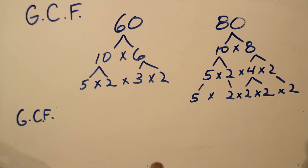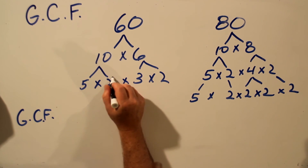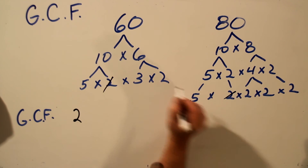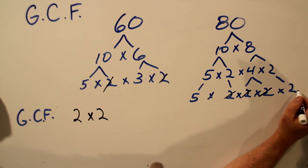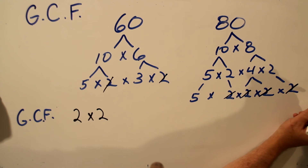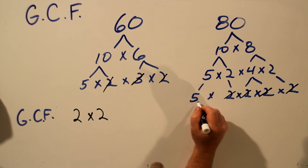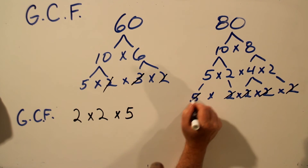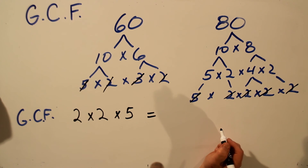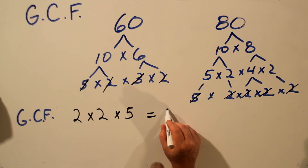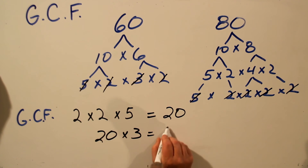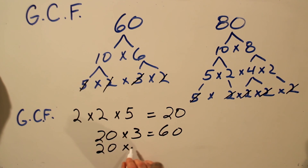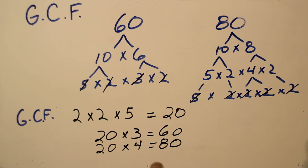So we'll find the greatest common factor. There's a 2 in this list and a 2 in this list, so we'll use 2. And there's another 2 in this list and another 2 in this list, so we can use 2 again. There are more 2s in the 80 list but no more 2s in the 60 list, so we'll cross those off. And there's a 5 in this list and a 5 in this list, so we can use the 5. The greatest common factor for 60 and 80 is 2 times 2, which is 4, times 5, which is 20. So 20 is the greatest common factor. To check: 20 times 3 is 60, and 20 times 4 is 80. So 20 is the largest number that goes into both 60 and 80 — it's the greatest common factor.